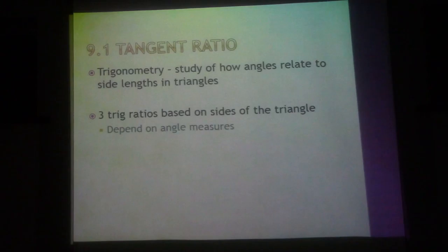There are three trig ratios: sine, cosine, and tangent, depending upon what sides are given to us and what we're trying to find. The size of the triangle doesn't matter—we're looking at angle measurement and the lengths of each side.